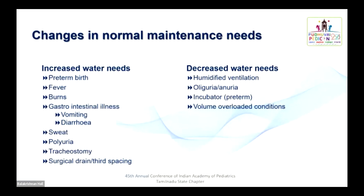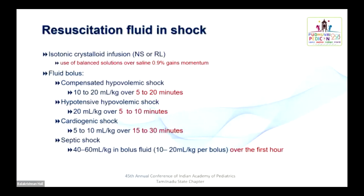Conditions with increased water needs apart from maintenance include preterm birth, fever, burns, gastrointestinal illness like vomiting and diarrhea, excessive exercise, polyuria, tracheostomy, and surgical drains. Decreased water needs occur when the child is ventilated with humidified oxygen, has volume overload, oliguric or anuric conditions, or a preterm infant nursed in an incubator. In war situations like shock, the fluid of choice is isotonic crystalloid — normal saline or Ringer's lactate — but balanced crystalloids are now gaining momentum as they avoid hyperchloremic acidosis and related morbidity and mortality.